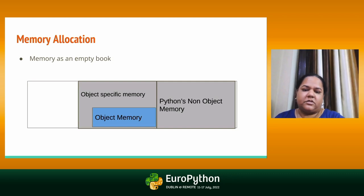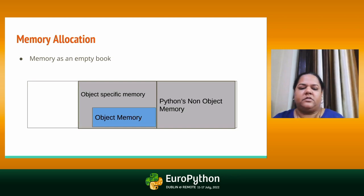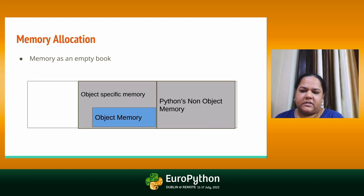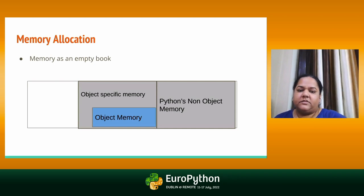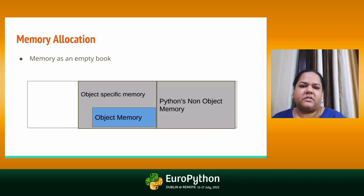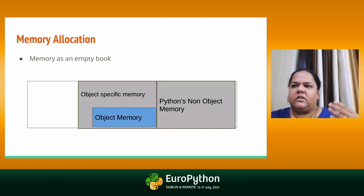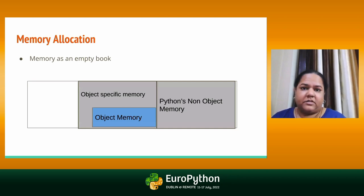This object allocator is where most of the memory management happens. There are two parts: one is object-specific memory, where your actual objects lie, and Python's non-object memory, which takes care of the processing — the stacks and other things needed to process it. This object allocator gets called every time a new object needs space to be allocated or an existing object is deleted. The question is: how will the memory manager know that a particular object needs to be deleted? It's not marked anywhere — how should it know? That's the question we are going to answer now.